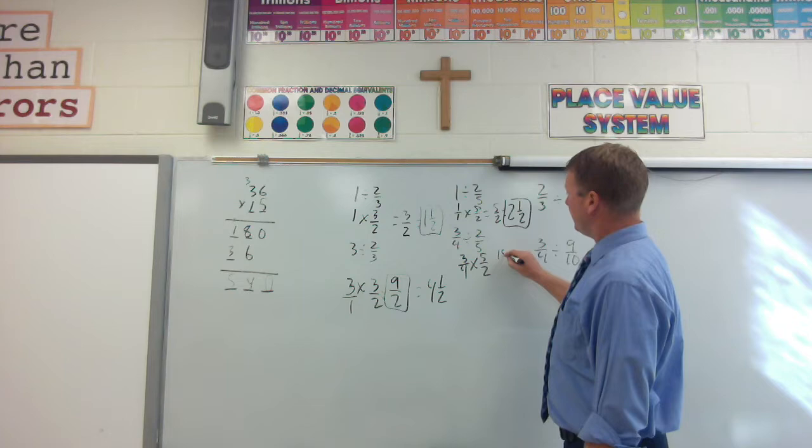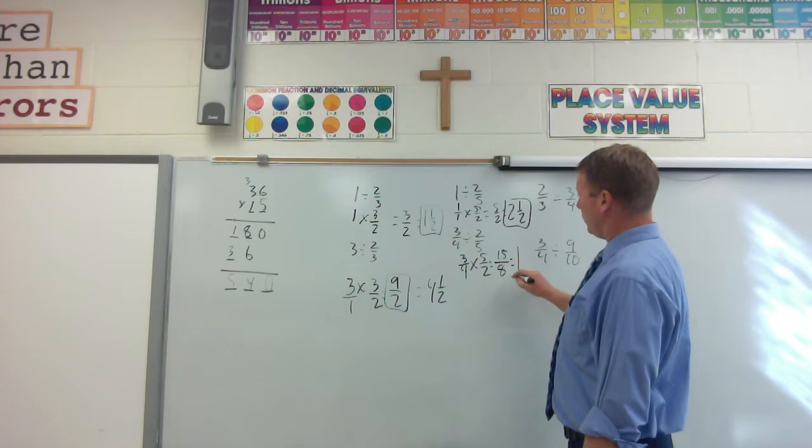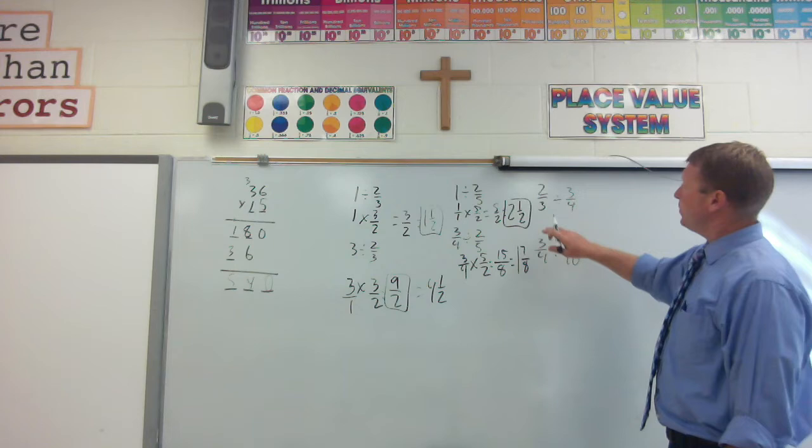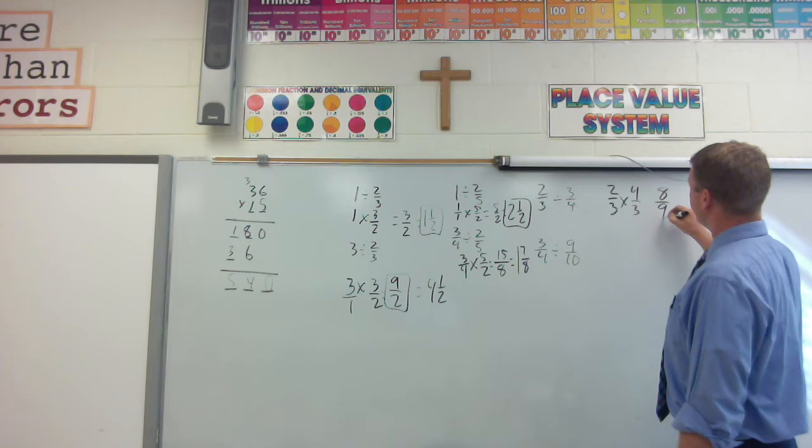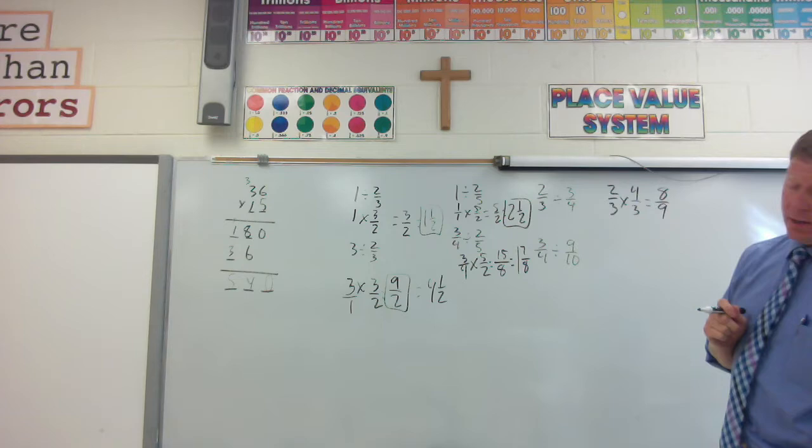I multiply the tops, I get 15. I multiply the bottoms, I get eight. I simplify by dividing. One goes in there, I have seven and seven eighths left over. Next problem, stays the same. Changes to multiplication, flips over, multiply the tops, gives me eight. Multiply the bottoms, gives me nine. Problem solved. Cruising on.